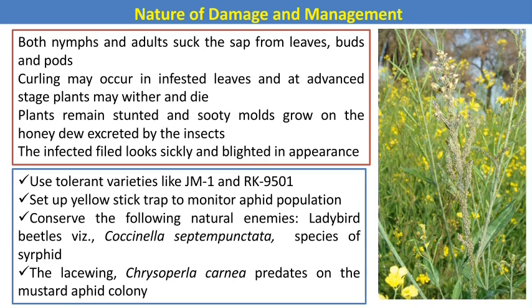In infected fields, the field looks sickly and blackish in appearance. For management practices, resistant varieties against mustard aphids include JM1 and RK9501. Yellow sticky traps can be used to monitor adults. Conserve natural enemies like Coccinella septempunctata (Lady Bird Beetle). Chrysoperla carnea is also an effective predator against aphids.